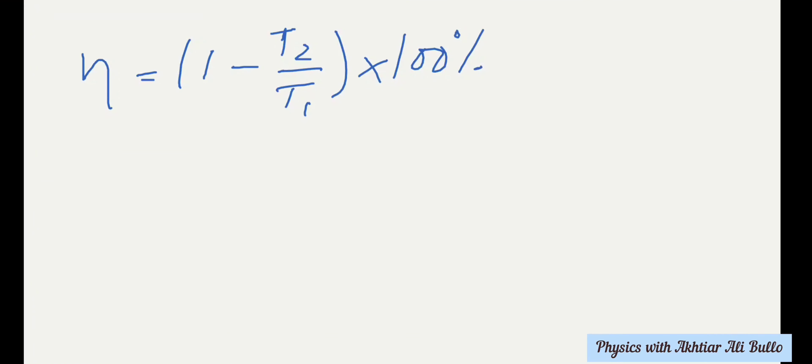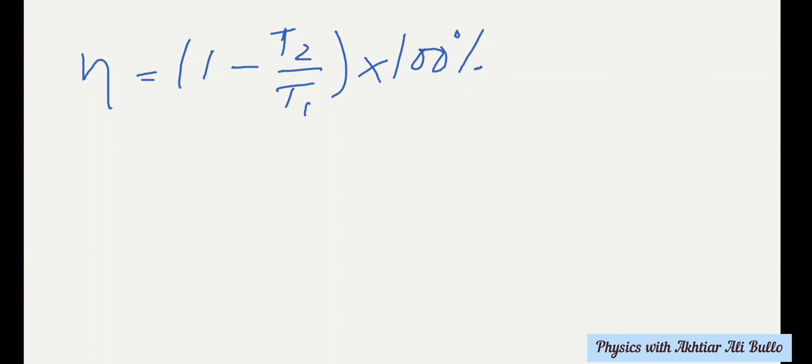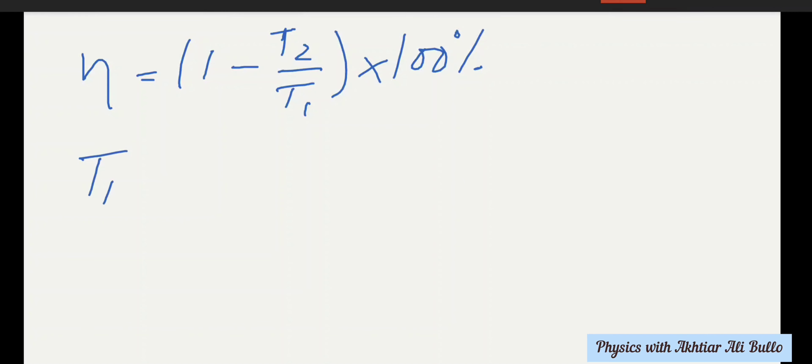The temperature of the source is given as 227 degrees Celsius. To convert it into Kelvin, we will add 273. So T1 = 227 + 273 = 500 Kelvin.